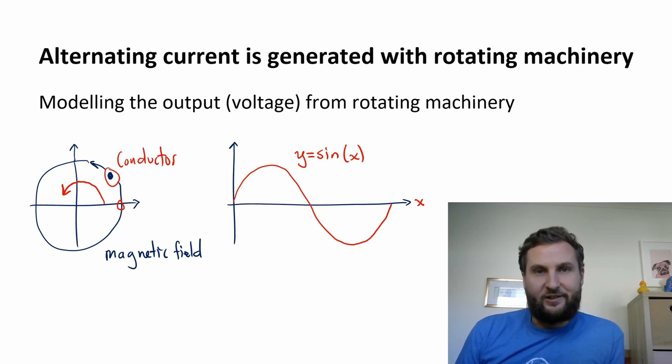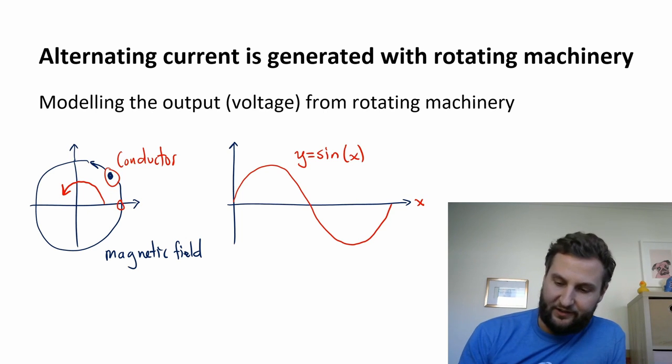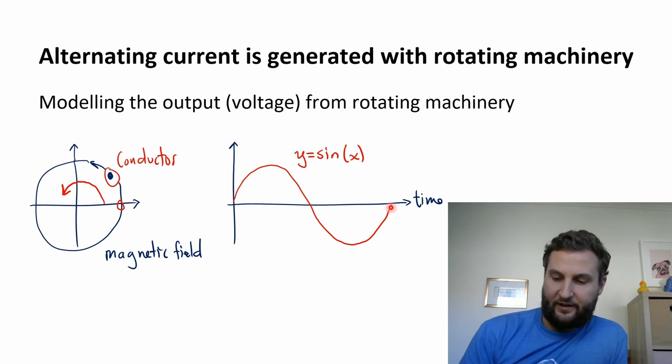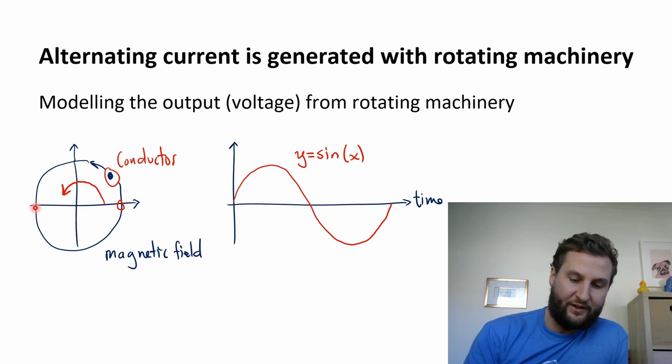Now as our conductor is going to be rotating, we're not going to call this x, this is going to be time. So when it first starts out it's at zero, a little bit later it's in this up portion, a little bit later it's coming down, and then a little bit later it's back to where it started. Now it also went through zero here, but if you're tracking one particle it doesn't come back to where it started until a full cycle or 360 degrees.